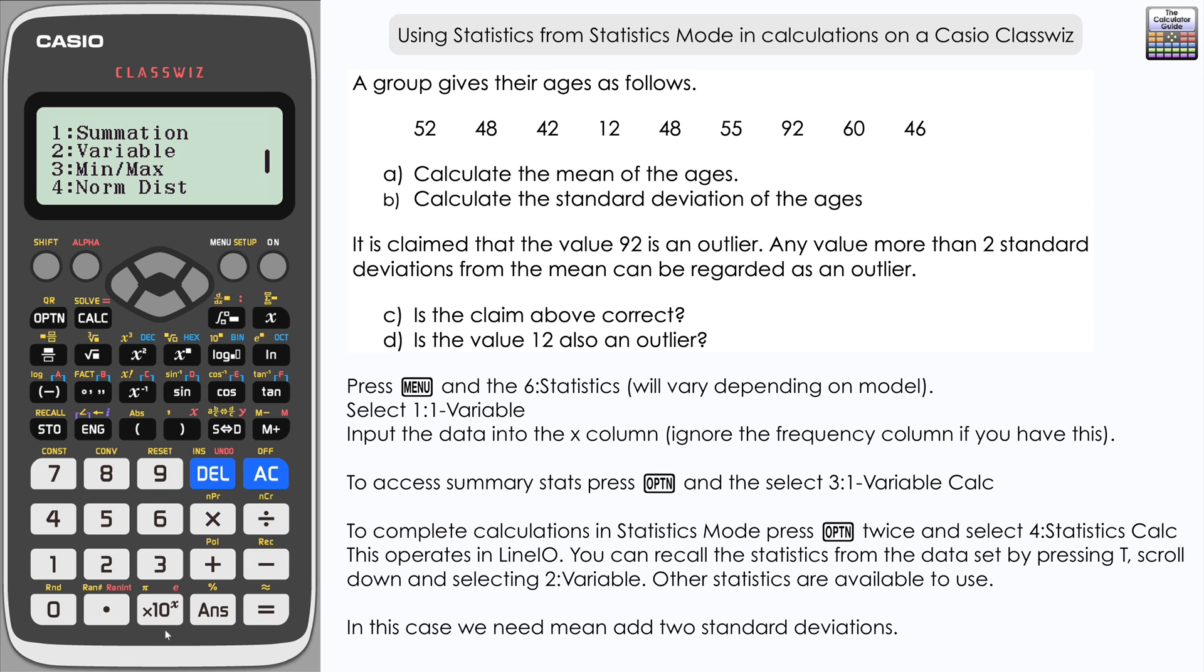Then we want to add two standard deviations to that. 92 is clearly greater than the mean, so we're going to go above that, so plus two.